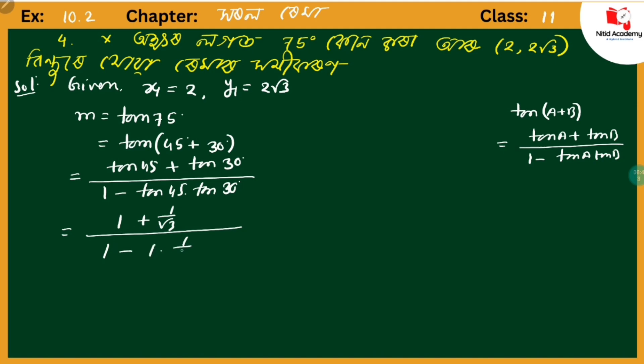This gives us 1 + 1/√3. The LCM of the denominator is √3, so we get (√3 + 1)/√3 in the numerator. The denominator is 1 - 1/√3, which becomes (√3 - 1)/√3.